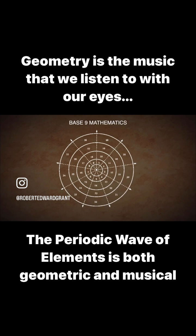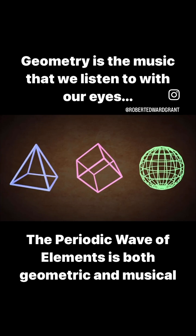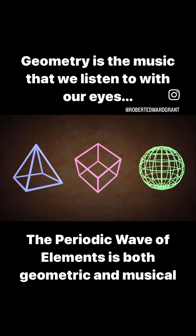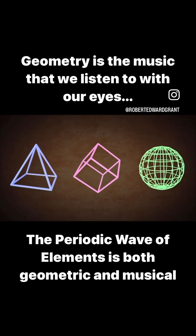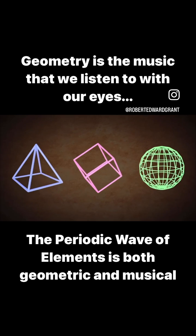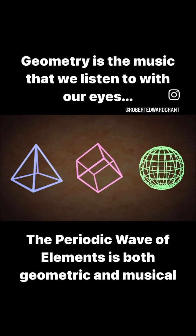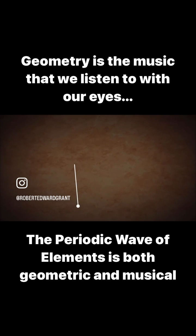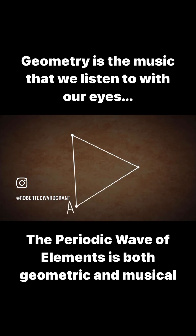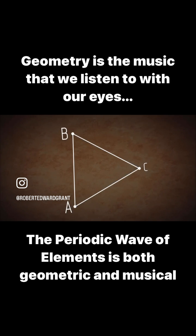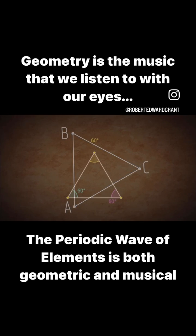If we look at the polygons that are all around us every day, an equilateral triangle is a good place to start. Equilateral meaning that it has three interior angles, each of 60 degrees, and they sum to 180 degrees.